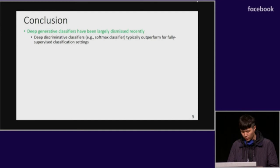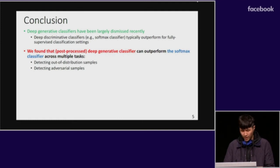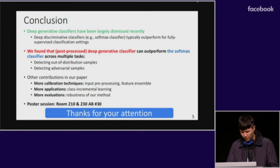Let me conclude this presentation. Deep generative classifiers have been largely dismissed because deep discriminative classifiers like the softmax classifier typically outperform them for supervised classification setups. However, in our paper we found that the deep generative classifier can outperform the softmax classifier across multiple applications, including detecting out-of-distribution samples and adversarial samples. There are more details in our paper including calibration techniques, applications, and evaluation, so please come to our poster session today for more information. Thanks.